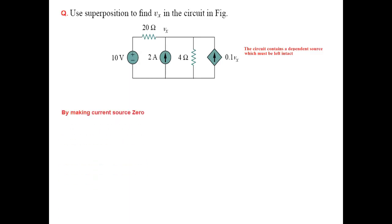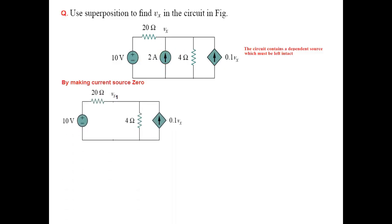So let's take the first source. We make the current source 0, which means we cut it open. Our circuit will now become like this — the current source has been removed. We need to find Vx, and for this circuit it will be called Vx1.